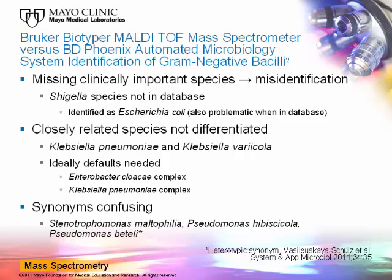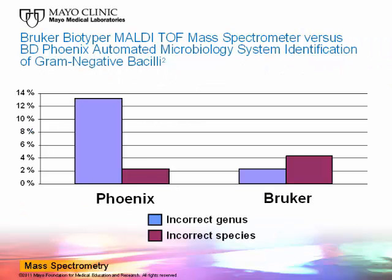There were limitations of the mass spectrometry system. Shigella species was not included in the study database and was identified as Escherichia coli, as these two organisms are so closely related they are not readily distinguished by this technique. Closely related species were not differentiated, including those comprising the Enterobacter cloacae complex and the Klebsiella pneumoniae complex. The database also contained confusing synonyms, variously identifying Stenotrophomonas maltophilia as Pseudomonas hibiscicola or Pseudomonas beteli. Incorrect genus identification was provided for 58% and 10% of isolates using BD-Phoenix and Bruker mass spectrometry respectively.